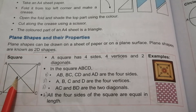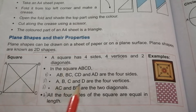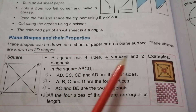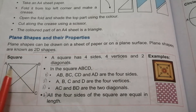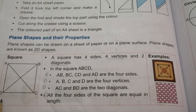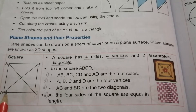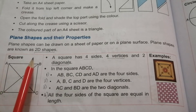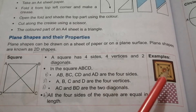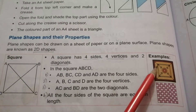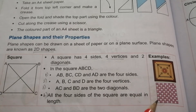The properties of a square are: it has four sides, four vertices and two diagonals. We can name this square as ABCD. The four sides are AB, BC, CD and AD. The four vertices are A, B, C, D. The two diagonals are AC and BD. In a square, all four sides are equal. Examples of a square are a carom board and a chess board.